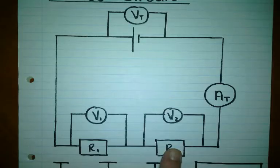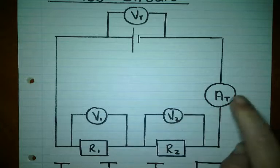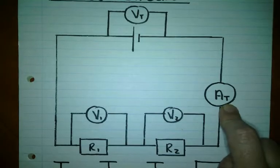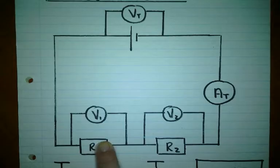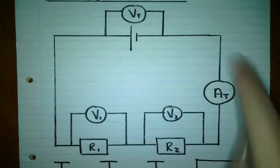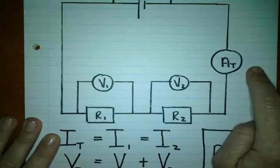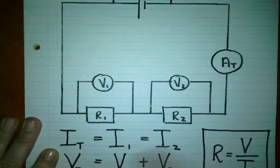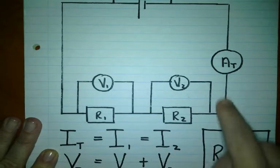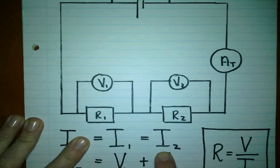I've got resistor 1 and resistor 2, which has voltmeter 1 and voltmeter 2 over it. I've got one cell which has the total voltage available to the circuit, and here I have an ammeter that measures the total current. Now in a series circuit, the current that goes through the cell also has to go through resistor 1, resistor 2, and through the ammeter. So the current anywhere in a series circuit is the same.